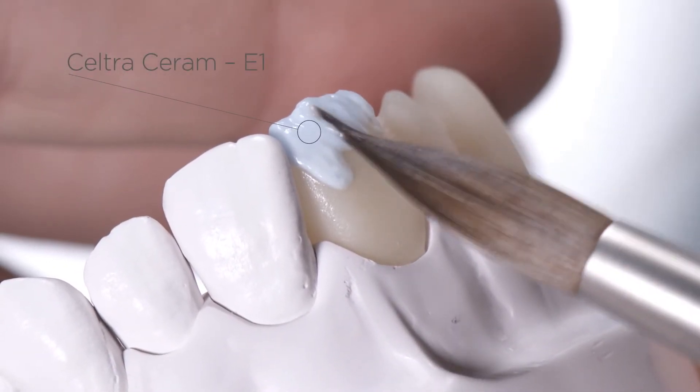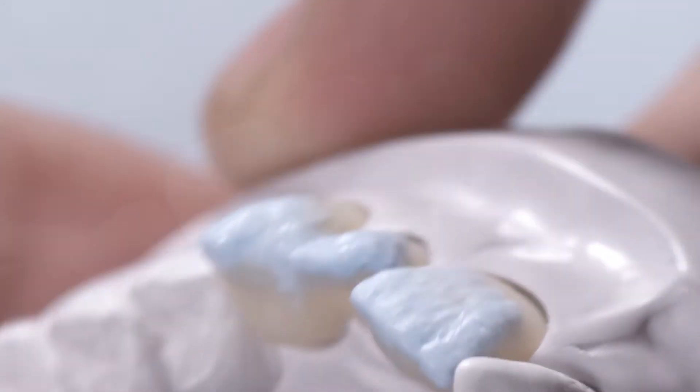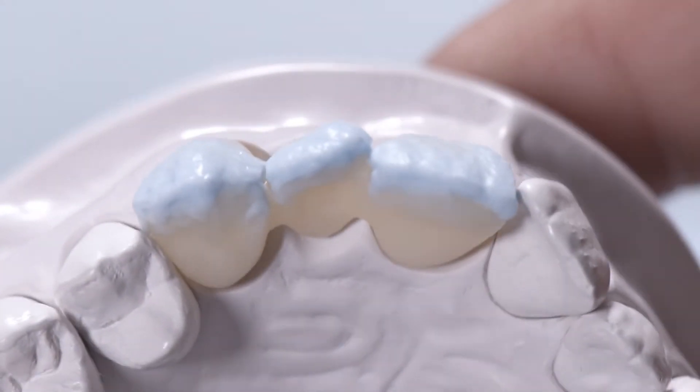Build up the labial and palatal aspects of the enamel layer with Enamel E1 and shape them to obtain their final contours.